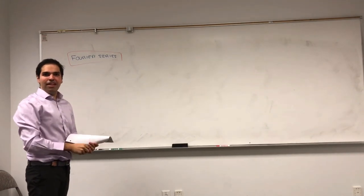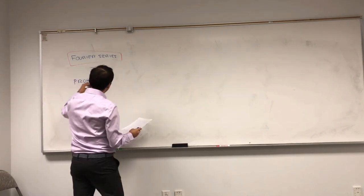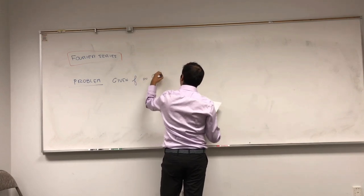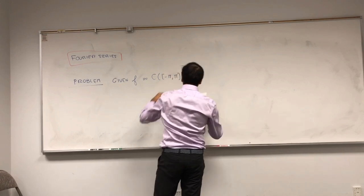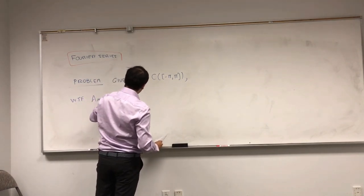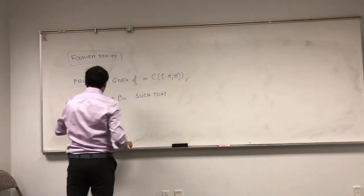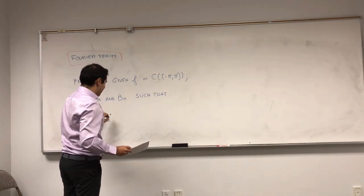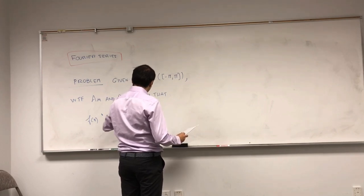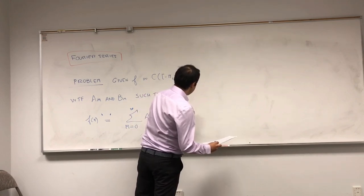At first, this does not seem like an orthogonality problem. So what is our problem here? Given a certain function f, continuous on the interval minus pi to pi, what we want to do is find coefficients am and bm such that f of x is approximately equal to the series from m equals 0 to infinity of am cosine of mx plus bm sine of mx.